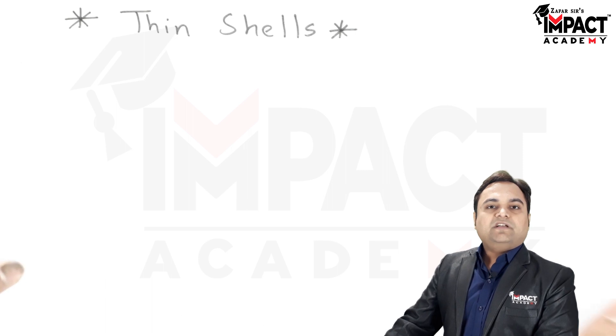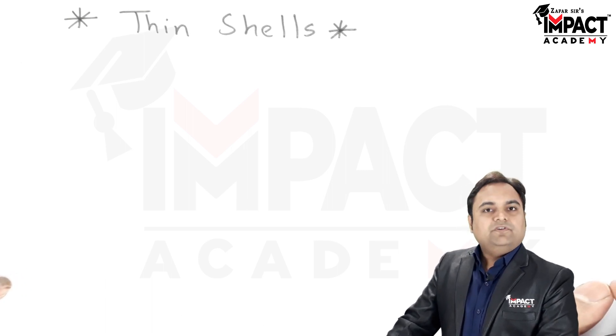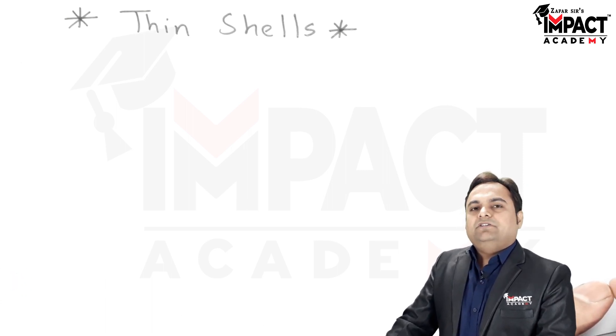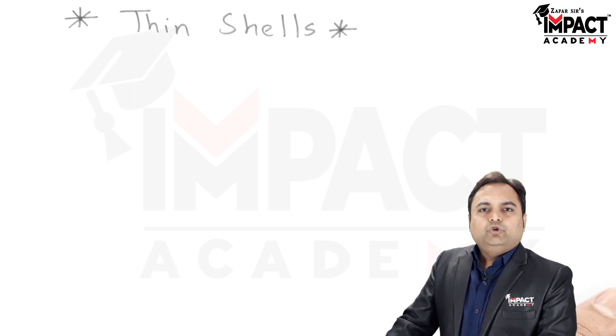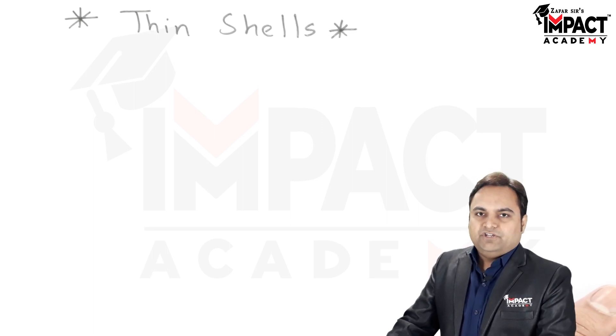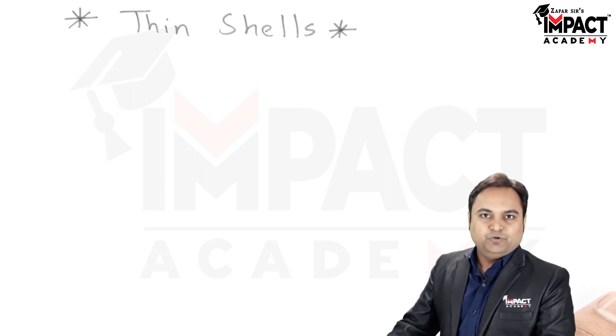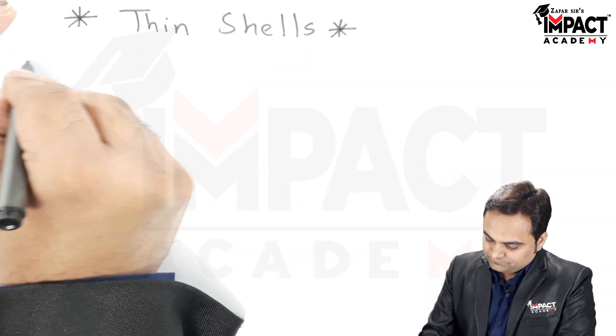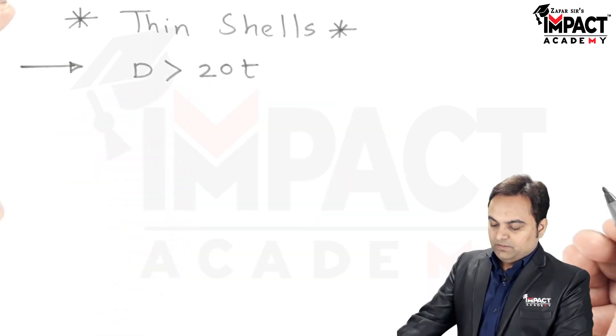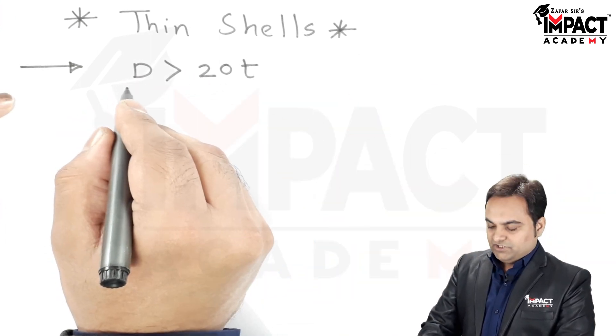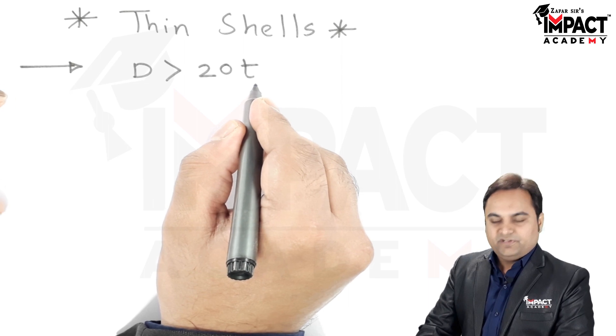Now, thin shells are those shells in which the internal diameter of the shell is greater than 20 times the thickness of the shell. I'll write that relation over here. The diameter of the thin shell is greater than 20 times its thickness.